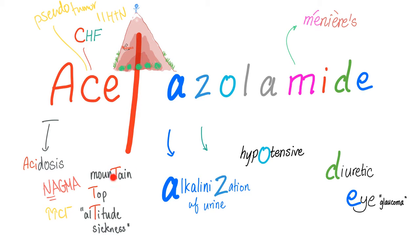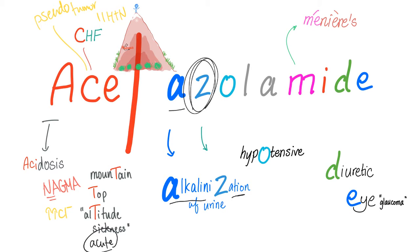Next, we have the T for the mountaintop — altitude sickness, especially acute mountain sickness. Because for chronic mountain sickness, you'll need some oxygen. Then you have A, because acetazolamide alkalinizes the urine — alkalinization is AZ. O, because it causes hypotension. Why? Because it's a diuretic.